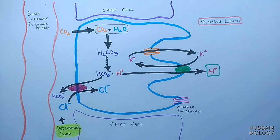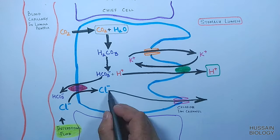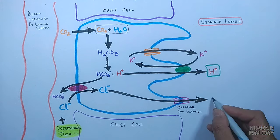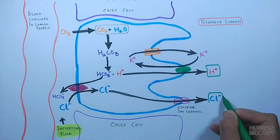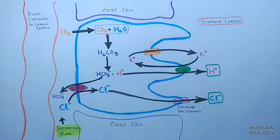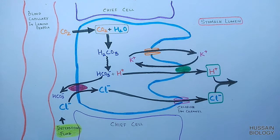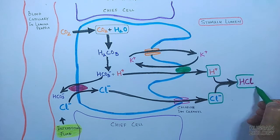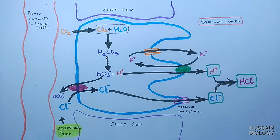The chloride ion is sent out of the cell into the stomach lumen through the chloride ion channel. So we have both proton and chloride ion in the lumen. These combine to form HCl in the stomach lumen. This is how HCl is generated inside the stomach lumen.